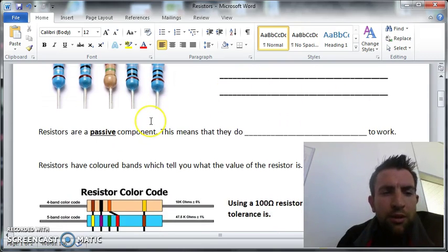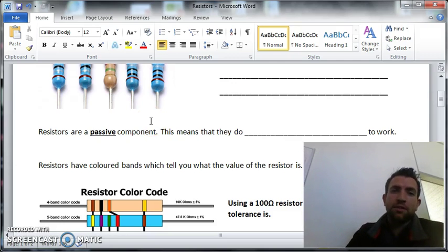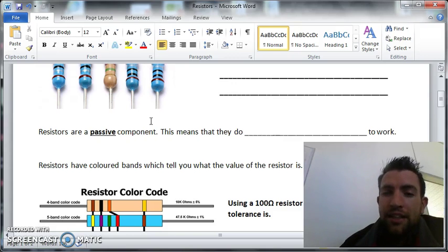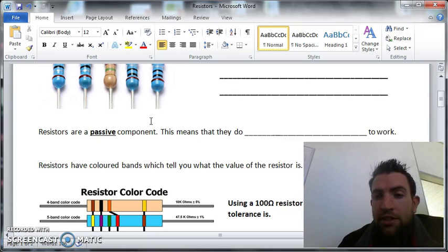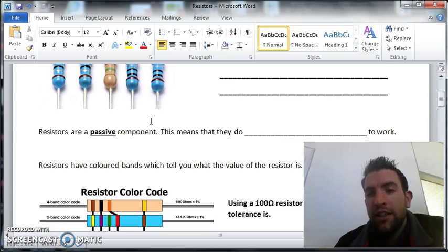Looking further down your page, it talks about resistors as a passive component. In electronics, a passive component doesn't need any energy to do its job - it still resists even without energy. On the flip side, a transistor needs an electrical charge to do its job.